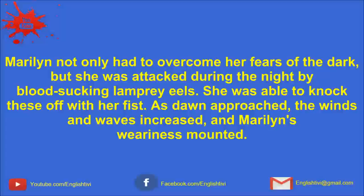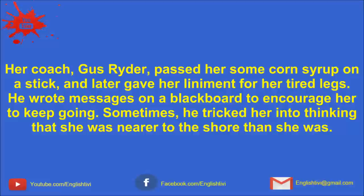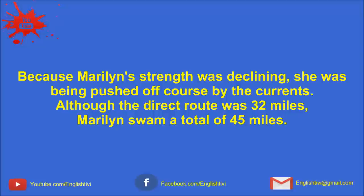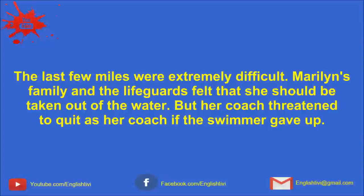Marilyn not only had to overcome her fears of the dark, but she was attacked during the night by blood-sucking lamprey eels. She was able to knock these off with her fist. As dawn approached, the winds and waves increased, and Marilyn's weariness mounted. Her coach, Gus Ryder, passed her some corn syrup on a stick and later gave her liniment for her tired legs. He wrote messages on a blackboard to encourage her to keep going. Sometimes he tricked her into thinking that she was nearer to the shore than she was. Marilyn fell asleep in the water twice and had to be awakened. Although the direct route was 32 miles, Marilyn swam a total of 45 miles.